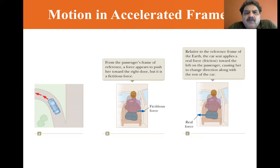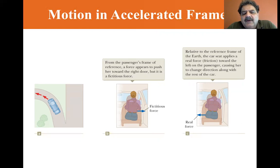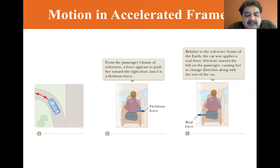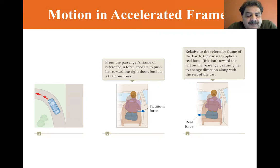The car represents a non-inertial reference frame undergoing centripetal acceleration toward the center of its circular path. The passenger feels an apparent force outward from the center of the circular path, in the direction opposite that of the acceleration. It is the passenger's own inertia that wants to keep her going straight.